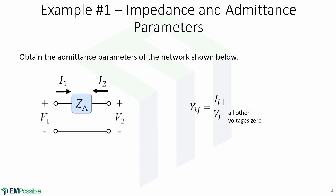For example number one, we will obtain the admittance parameters of the network shown below. Recall that to obtain the admittance, Yij is equal to Ii over Vj when all other voltages are zero.